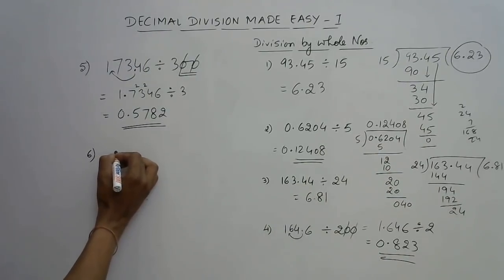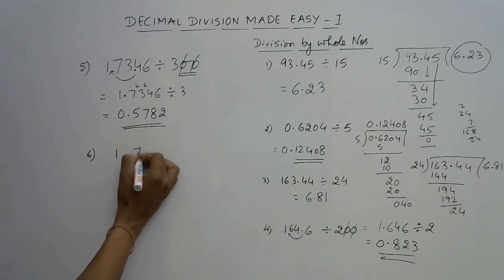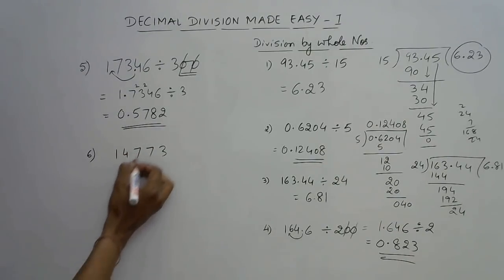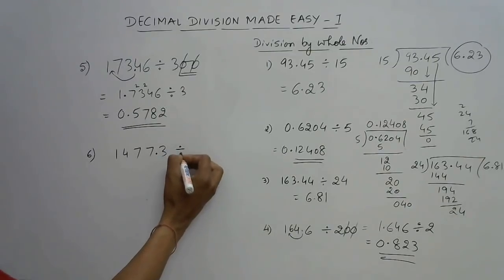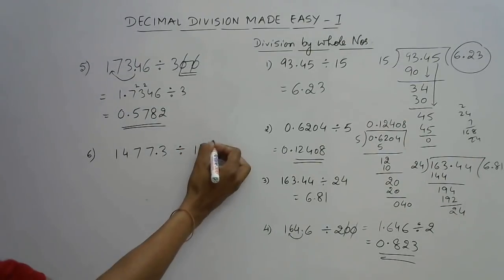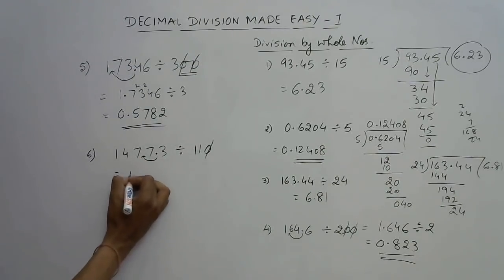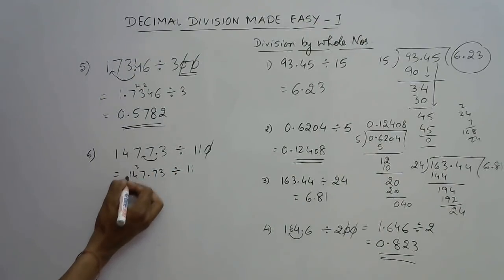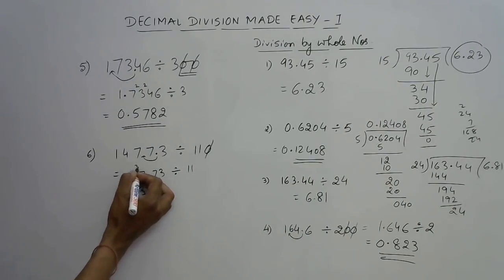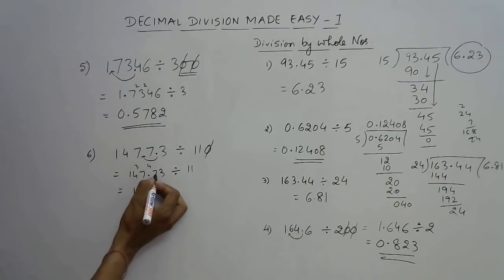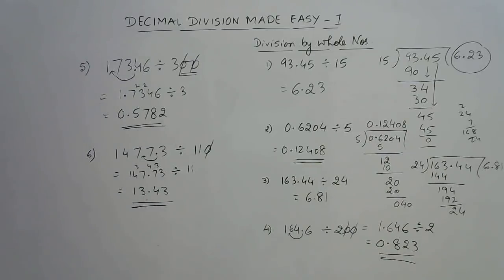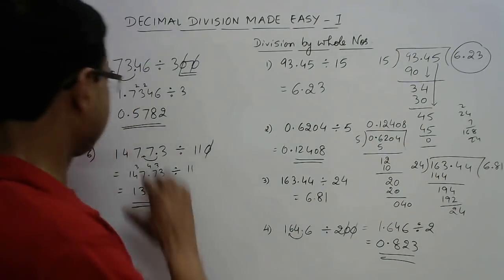For the final example: 1473.47 divided by 110. Cancel one zero and shift the decimal one place left, making it 147.347 divided by 11. 11 goes into 147 once giving 11... working through — 11 × 13 = 143, remainder 4. Bring down 3: 11 × 4 = 44, remainder 3. Bring down 7 after the decimal: 11 × 3 = 33. The final answer is 13.43.